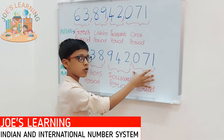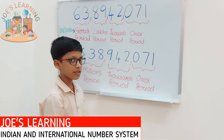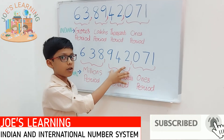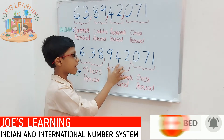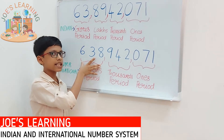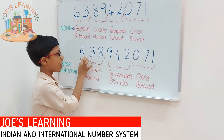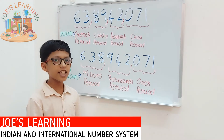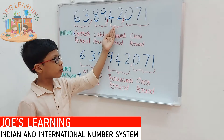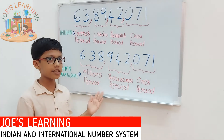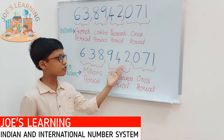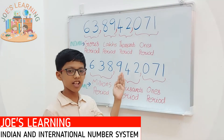In the international number system, the ones period also consists of ones, tens, and hundreds. The next three digits are in the thousands period: thousands, ten-thousands, and hundred-thousands. The next three digits are in the millions period: millions, ten-millions, and hundred-millions. In the Indian system we read it as 63 lakh 89 thousand 42071, but in the international system we read the same number as 638 million 942 thousand 071.